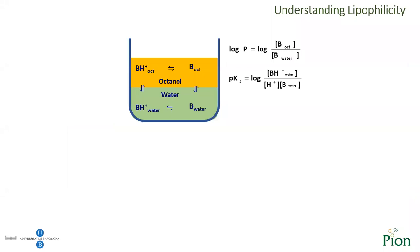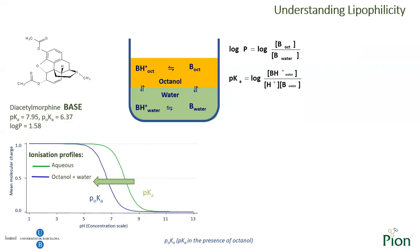This slide helps to understand how the potentiometric log P method works. In the water layer, we have the equilibrium between the ionized and neutral forms. However, by adding octanol, we disrupt this equilibrium as the neutral species begins to partition to the octanol layer. If the neutral species partitions, the equilibrium in water will be displaced, and consequently the measured pKa will shift. The higher the log P, the bigger the shift of the pKa will be observed.